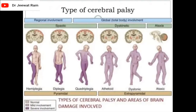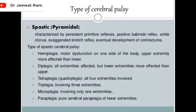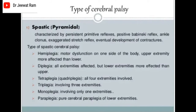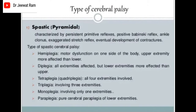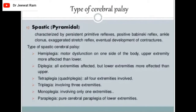Types of cerebral palsy are spastic, dyskinetic, and ataxia. Spastic cerebral palsy is characterized by persistent primitive reflexes, positive Babinski reflex, ankle clonus, exaggerated stretch reflex, and eventual development of contractures. Types of spastic CP include hemiplegia — motor dysfunction on one side of the body with upper extremities more affected than lower; diplegia — all extremities affected but lower extremities more affected than upper; tetraplegia or quadriplegia — all four extremities involved; triplegia — three extremities involved; monoplegia — one extremity involved; and paraplegia — pure cerebral paraplegia of lower extremities.